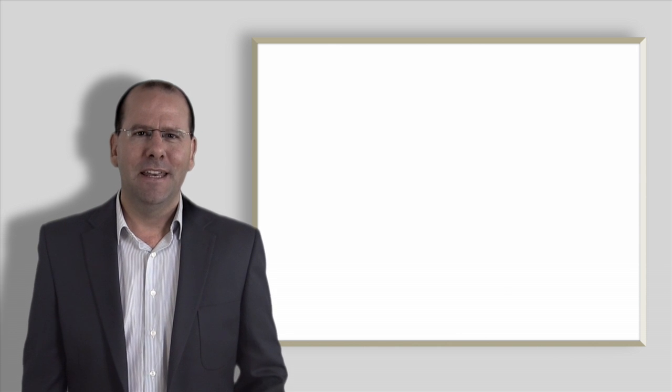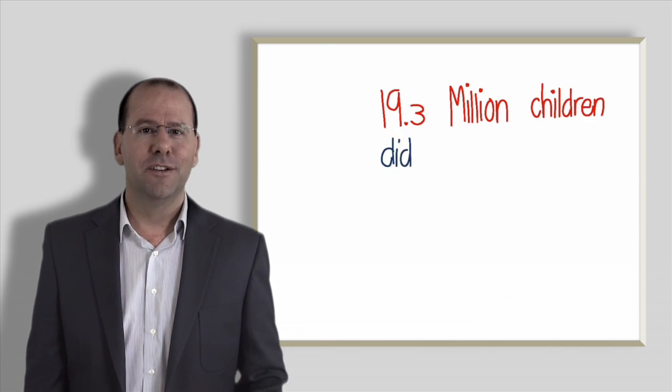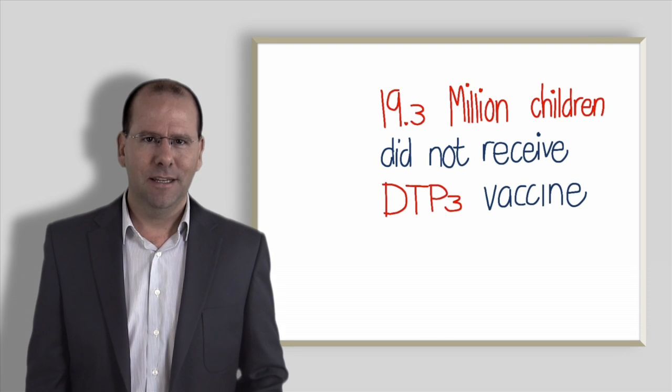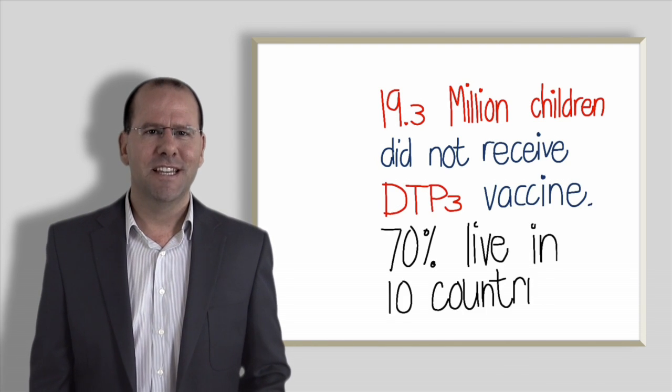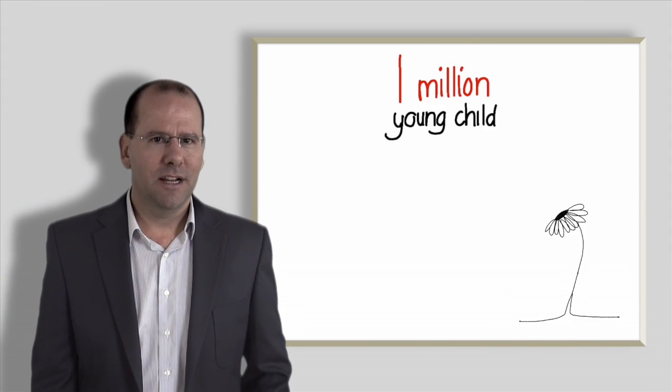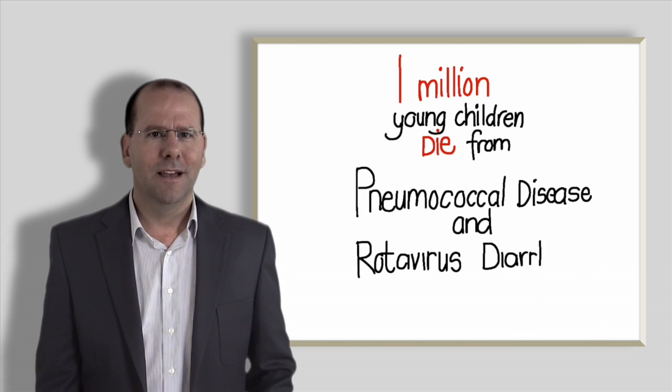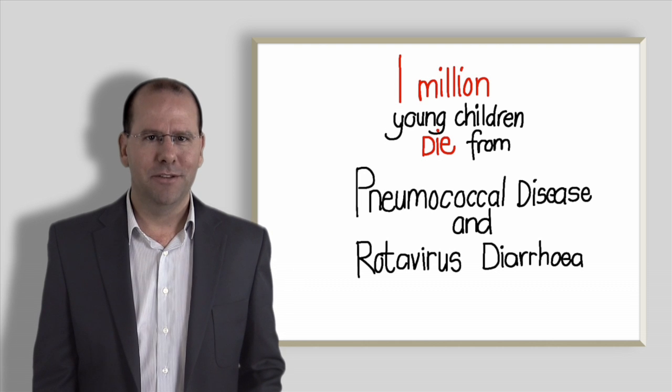Fact number three. An estimated 19.3 million children under the age of one did not receive the DTP3 vaccine. 70% of these children live in just 10 countries. Fact number four. Over one million infants and young children die every year from pneumococcal disease and rotavirus diarrhea. A large number of these deaths can be prevented through vaccination.